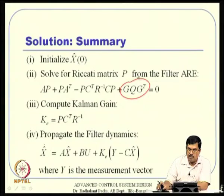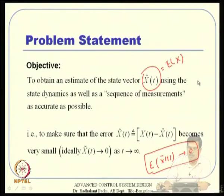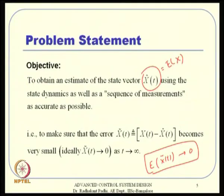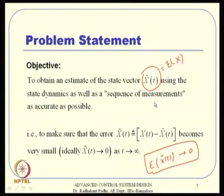This guarantees good stability behavior — the expected value of X-tilde goes to zero as required. There are also nice properties such as the separation principle, which means you can design the controller and the estimator separately. Operating U based on feedback of the estimated state does not destabilize the system, because the closed-loop eigenvalues are simply the union of the controller eigenvalues and the error dynamics eigenvalues.